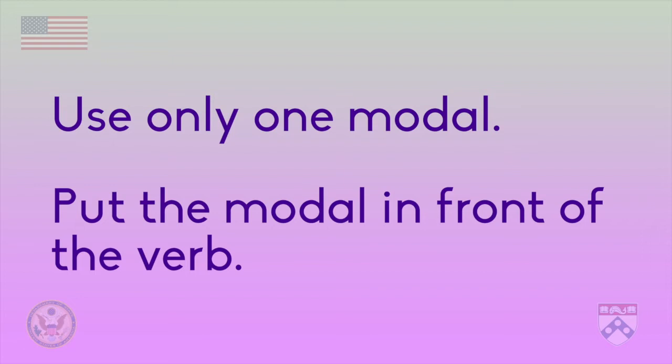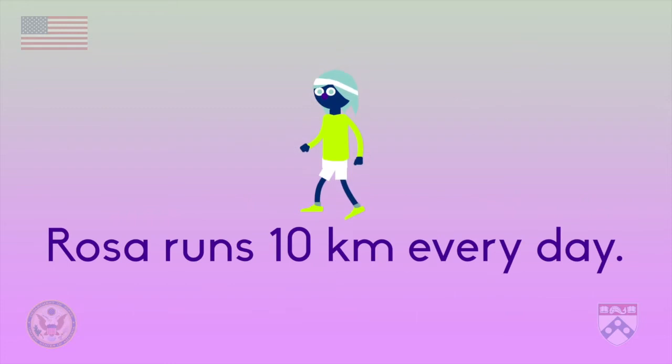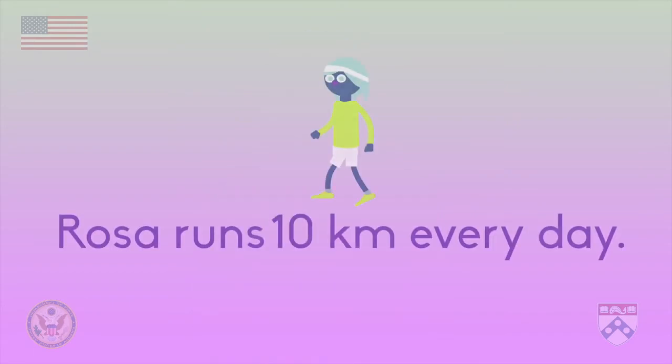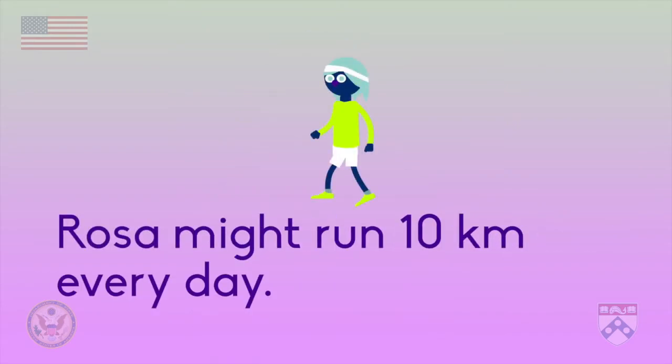Let's see an example. In the sentence, 'Rosa runs 10 kilometers every day,' we should first identify the verb. Did you find it? It's 'runs.' Now we just need to put our modal right in front of the verb. Let's try 'might' for possibility. And remember, we can add only one modal. That gets us the sentence: 'Rosa might run 10 kilometers every day.'